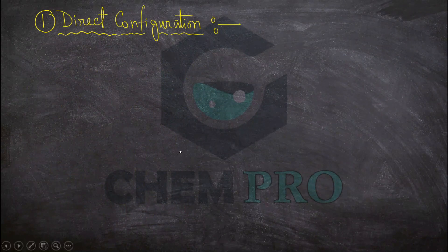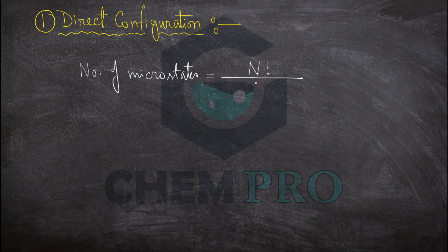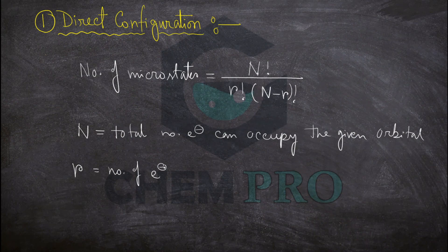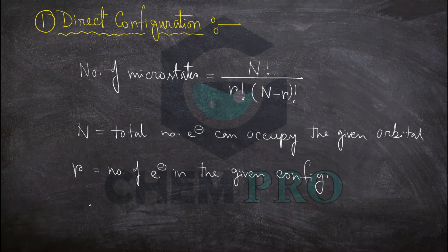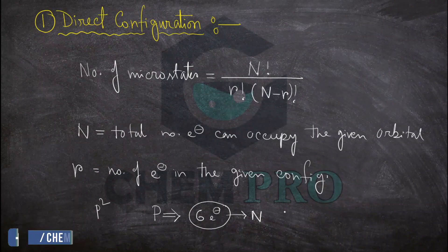Firstly, we calculate using the direct configuration. The formula is: number of microstates = N! / (r! × (N−r)!), where capital N is the total number of electrons that can occupy the given orbital, and r is the number of electrons in the given configuration. For example, for p2, p can have a total of six electrons, so N = 6, and since p2 is given, r = 2.